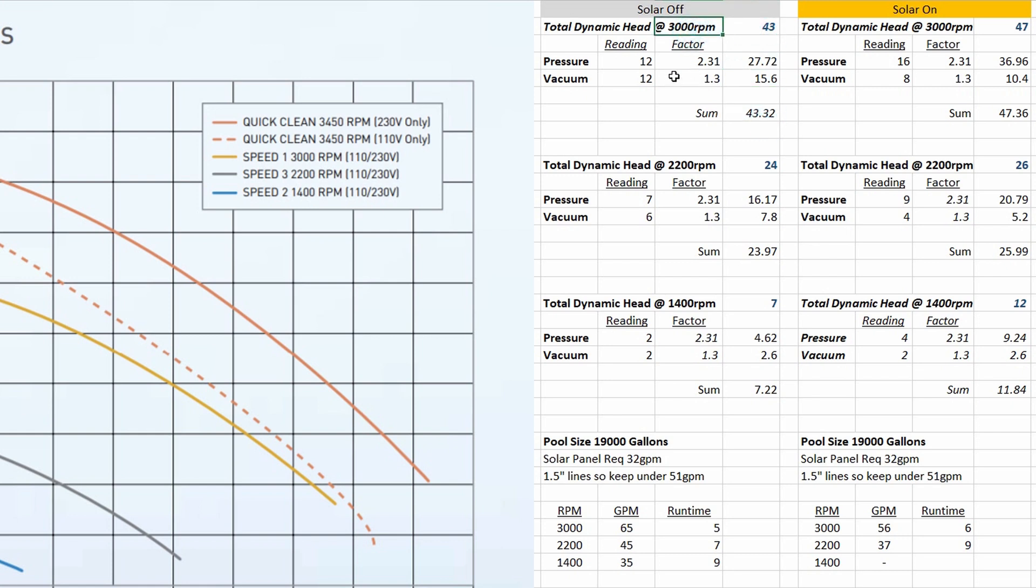So for example at 3000 RPM I had a pressure reading and vacuum reading both of 12 and you just multiply the pressure reading times 2.31 and the vacuum reading by 1.3 and that gives me 27.2 and 15.6 which when added together comes out to 43.32 so we'll round that to about 43.